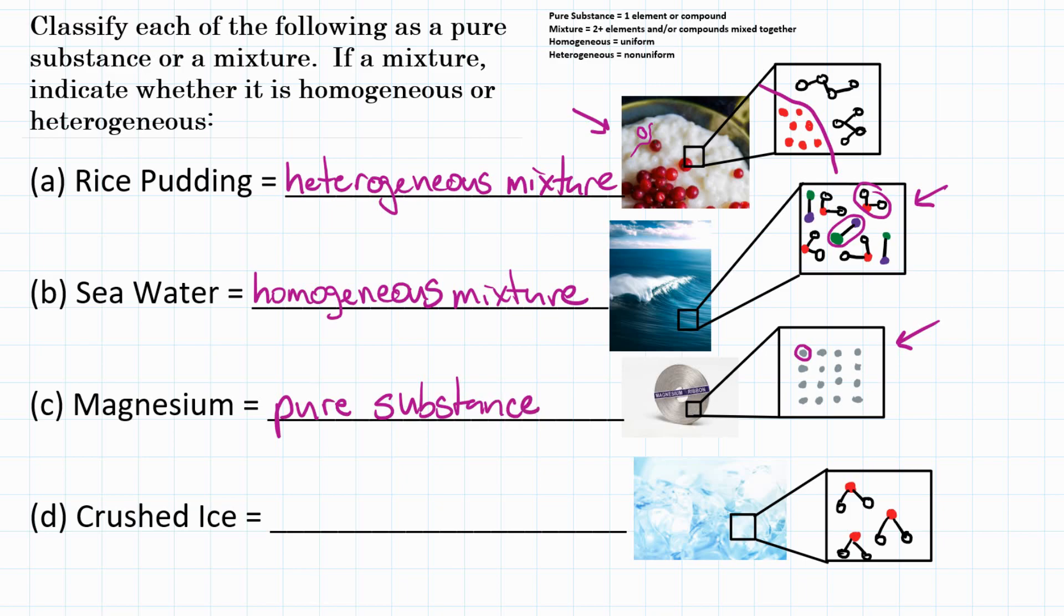Lastly, crushed ice. So ice is just the solid form of water. So if we are assuming that we have 100% pure water, we would only have one compound.